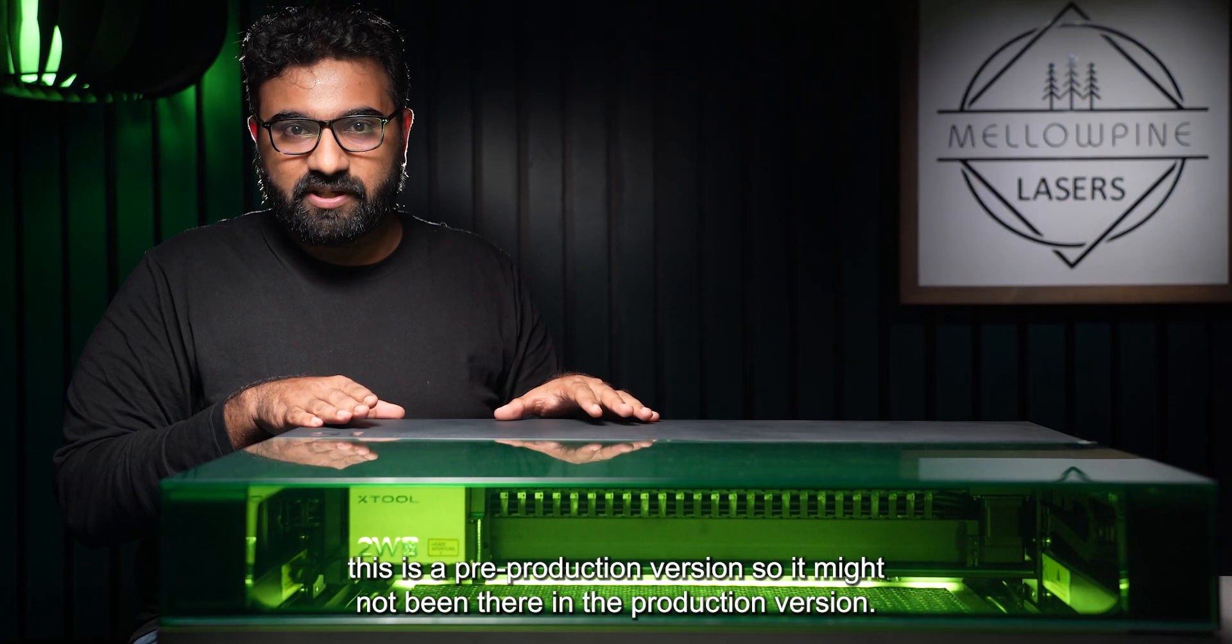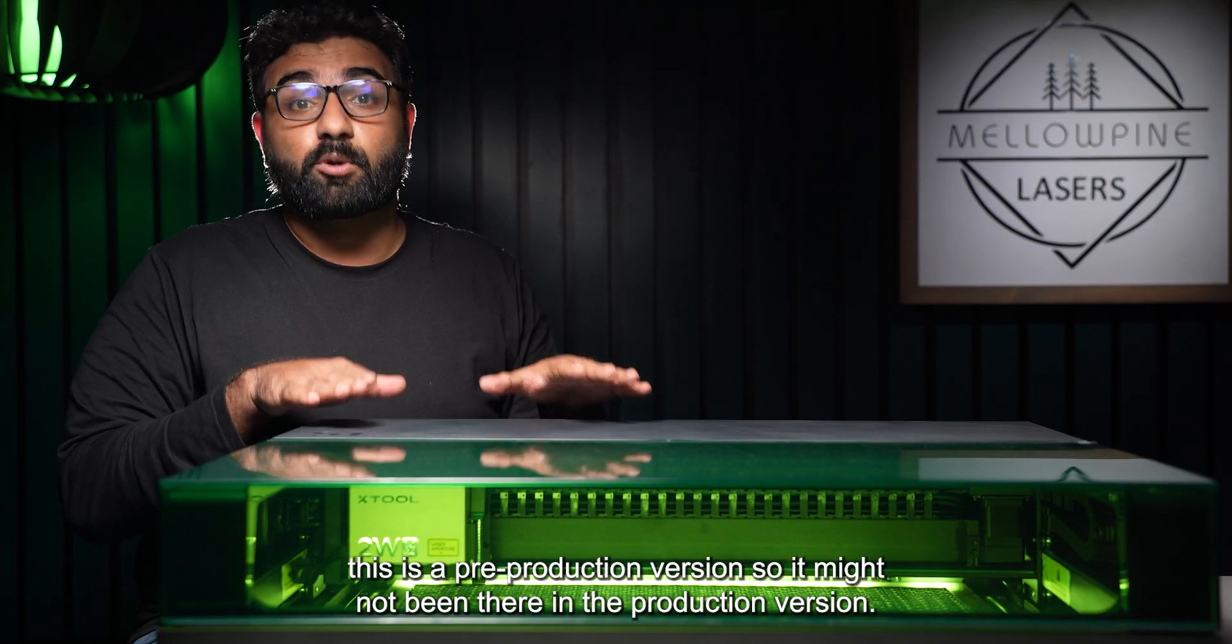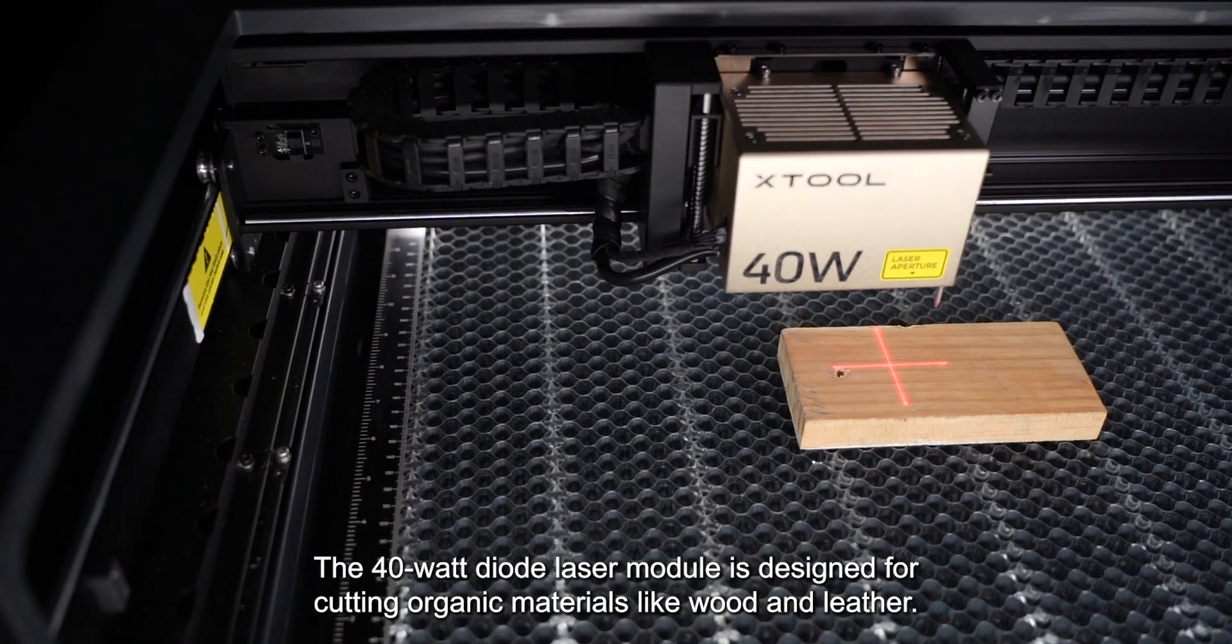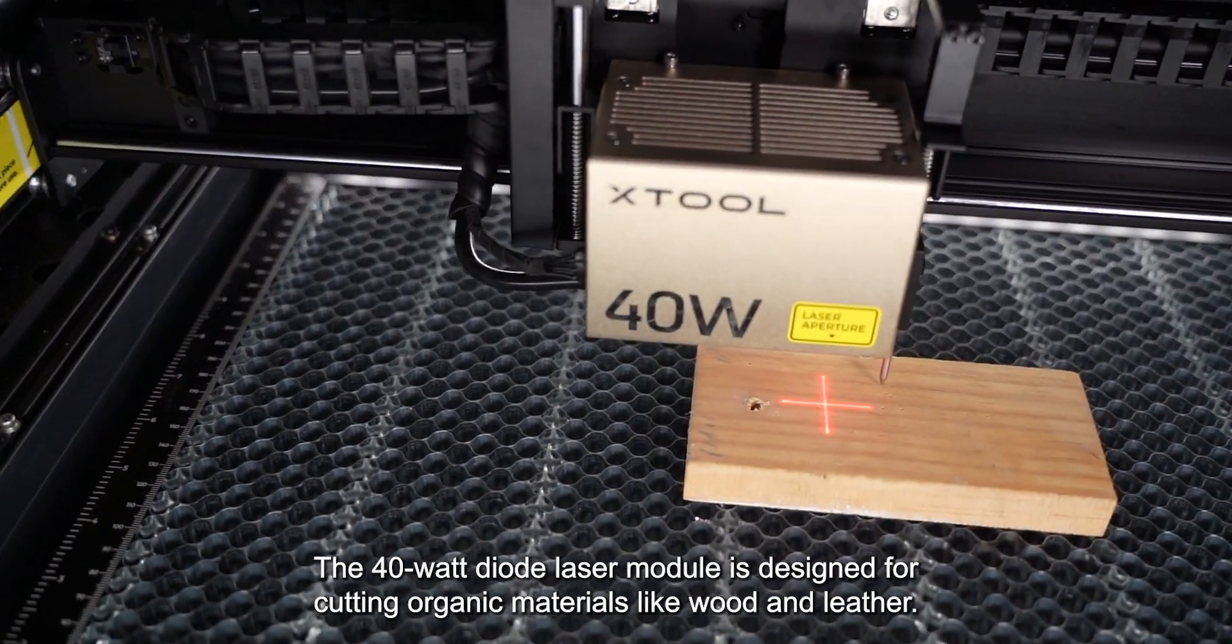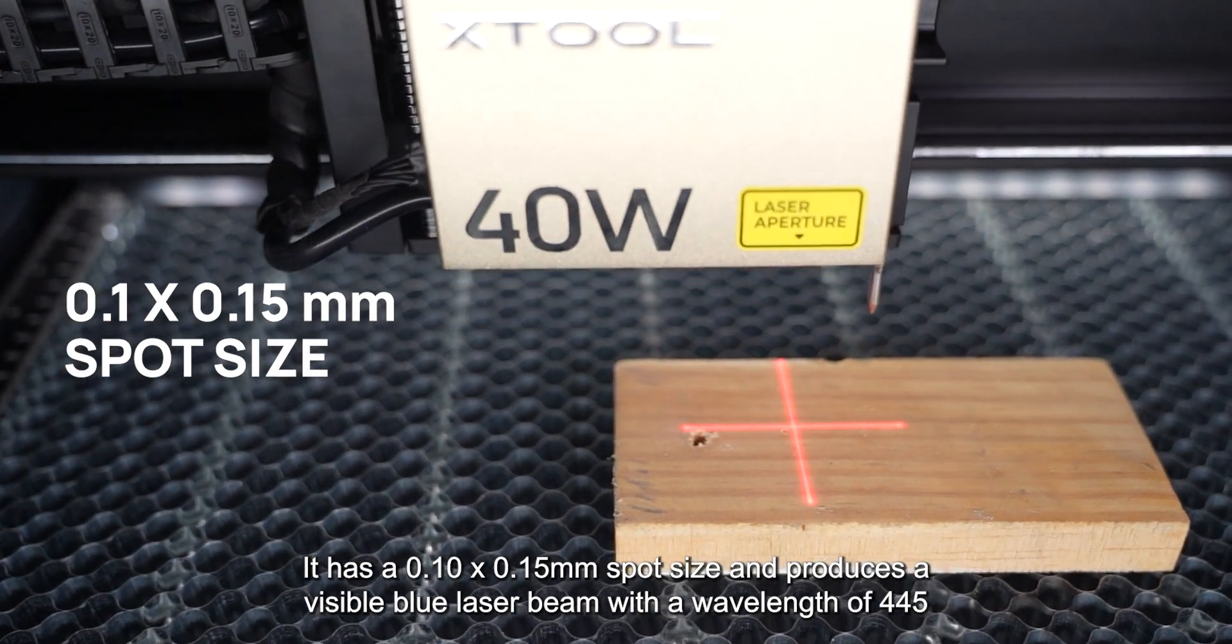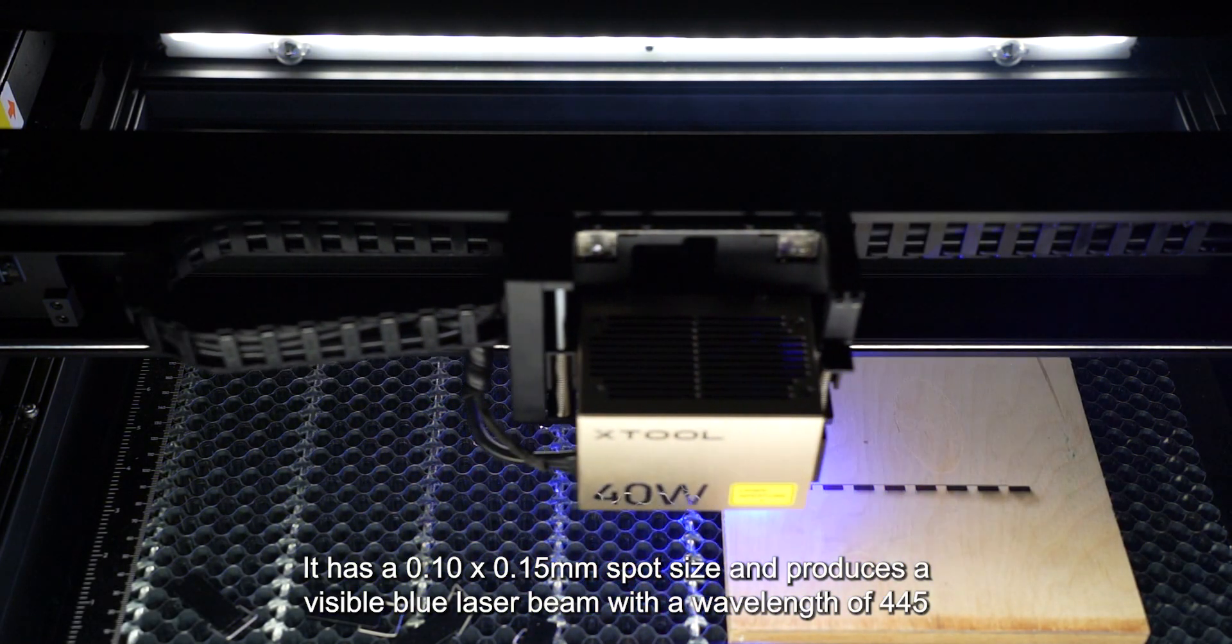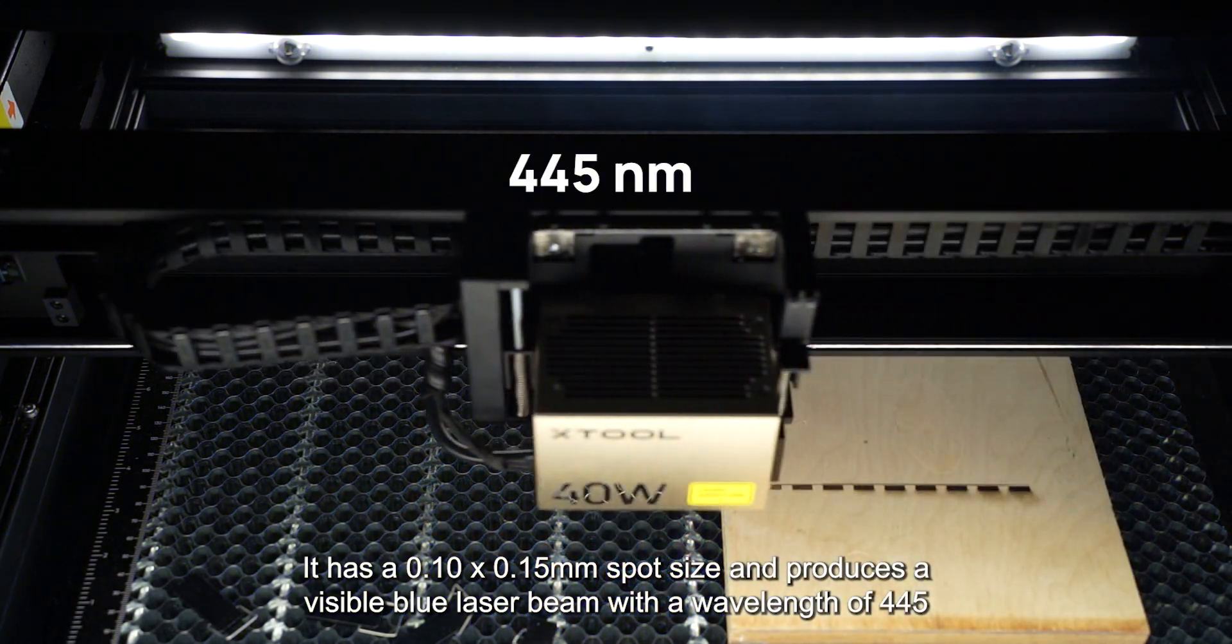Also, this is a pre-production version, so it might not be there in the production version. The 40 watt diode laser module is designed for cutting organic materials like wood and leather. It has a 0.1 by 0.15 millimeter spot size and produces a visible blue laser beam with a wavelength of 445 nanometers.